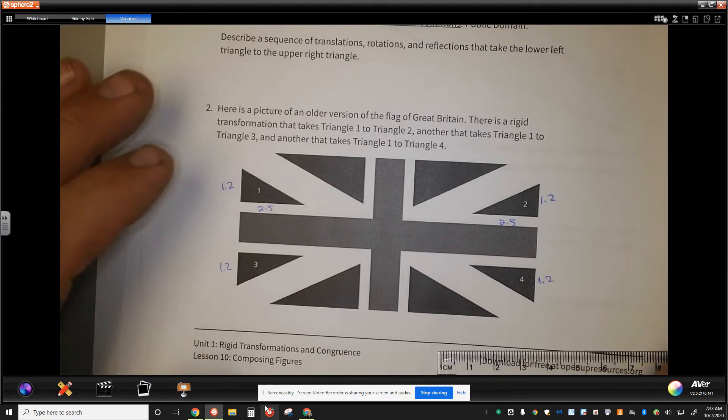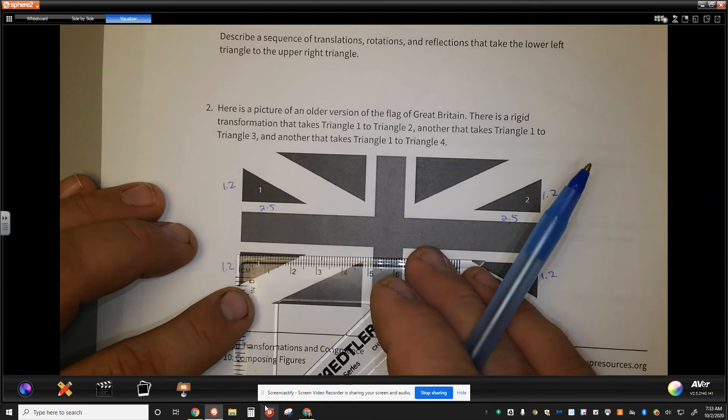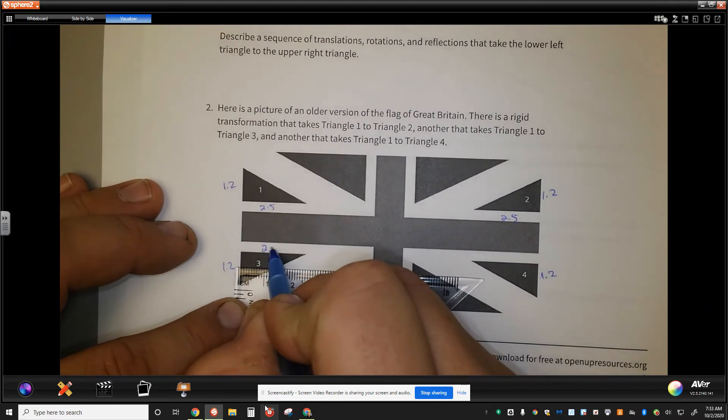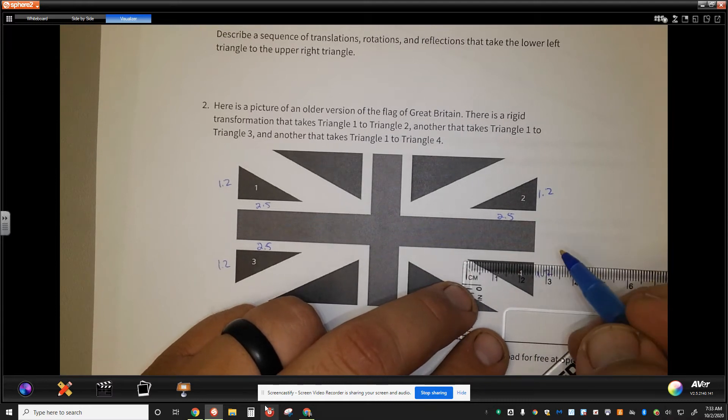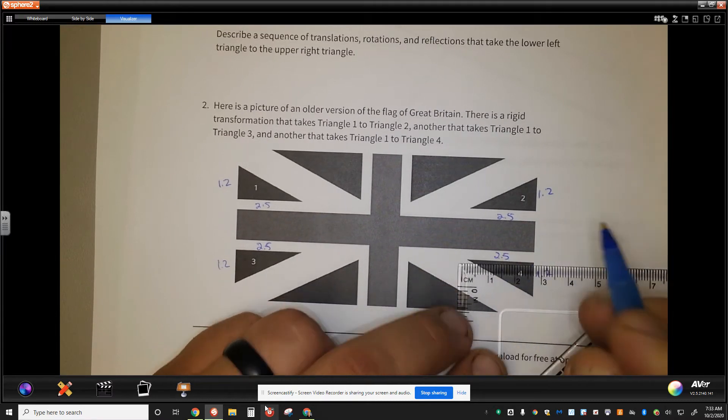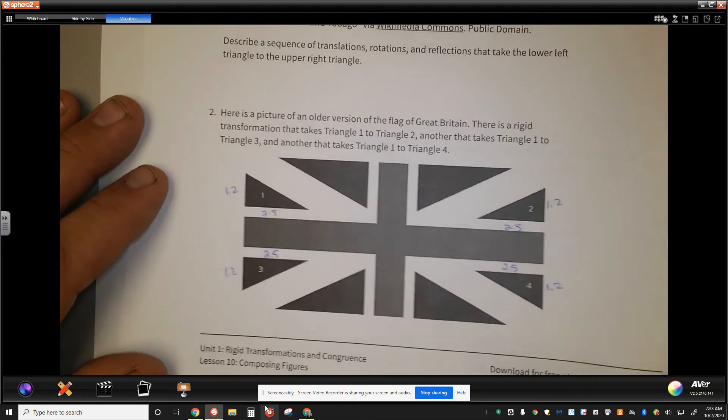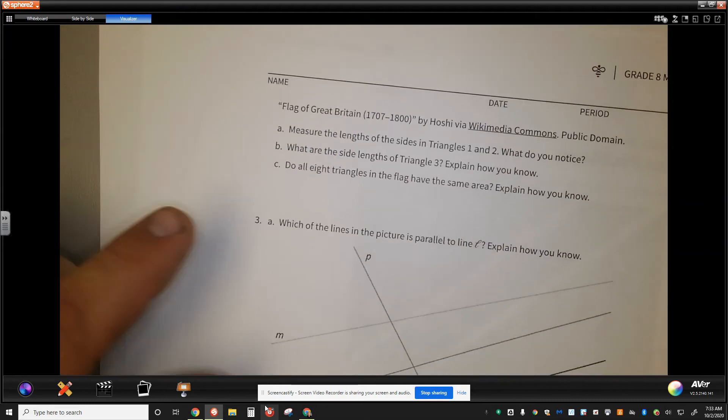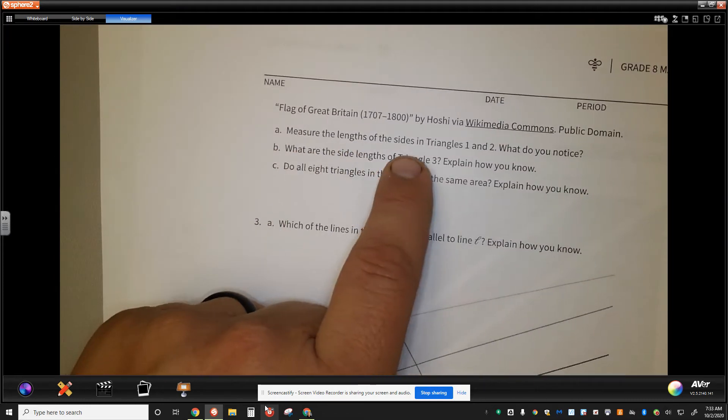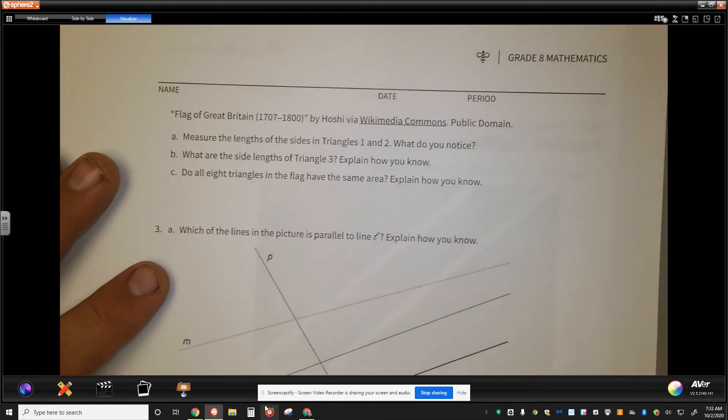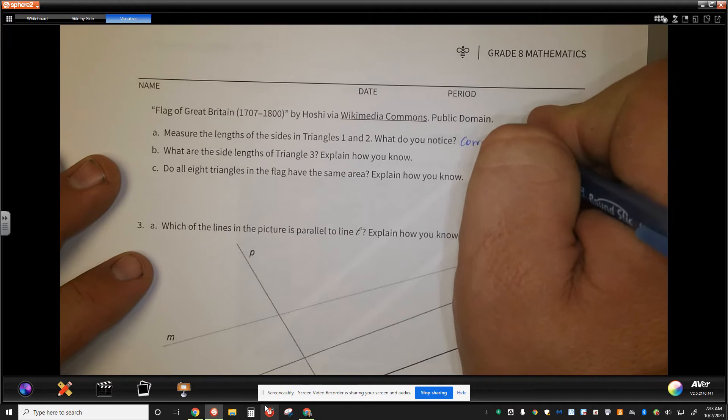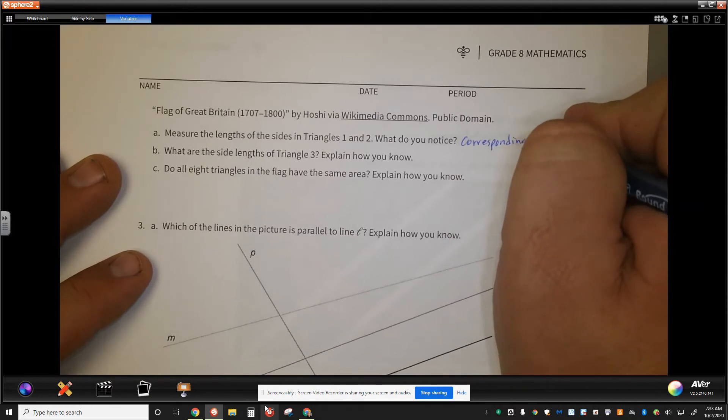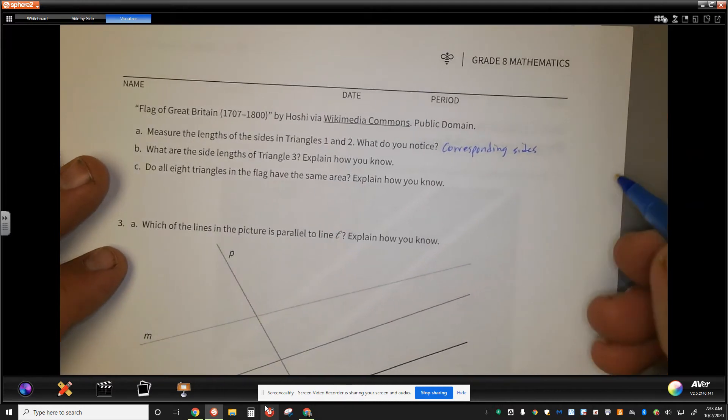And by rigid motion, if this one is the same, 2.5, by rigid motion, it's very likely that 3 and 4 are also the same. So what can I say? Let's go back to these ones and figure this out. The measure of the sides of triangle 1 and 2, what do you notice? Well, corresponding sides have equal length.